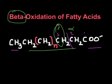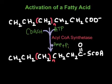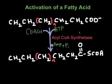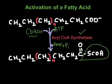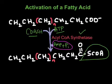Before a fatty acid undergoes beta oxidation, it must be activated. Long-chain fatty acids are activated at the outer mitochondrial membrane by long-chain fatty acyl-CoA synthetase, which adds CoA to produce fatty acyl-CoA. To add CoA, acyl-CoA synthetase uses ATP and breaks it down into AMP plus Pi, meaning two ATPs are effectively consumed.